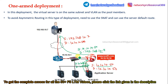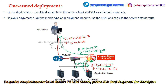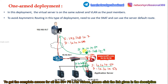By configuring SNAT we can avoid asymmetric routing. Asymmetric routing itself is not necessarily a mistake, but the main issue is that if the response bypasses F5, it may miss the features and benefits of using F5. That's why we can overcome the drawback of one-arm deployment by using source NAT.